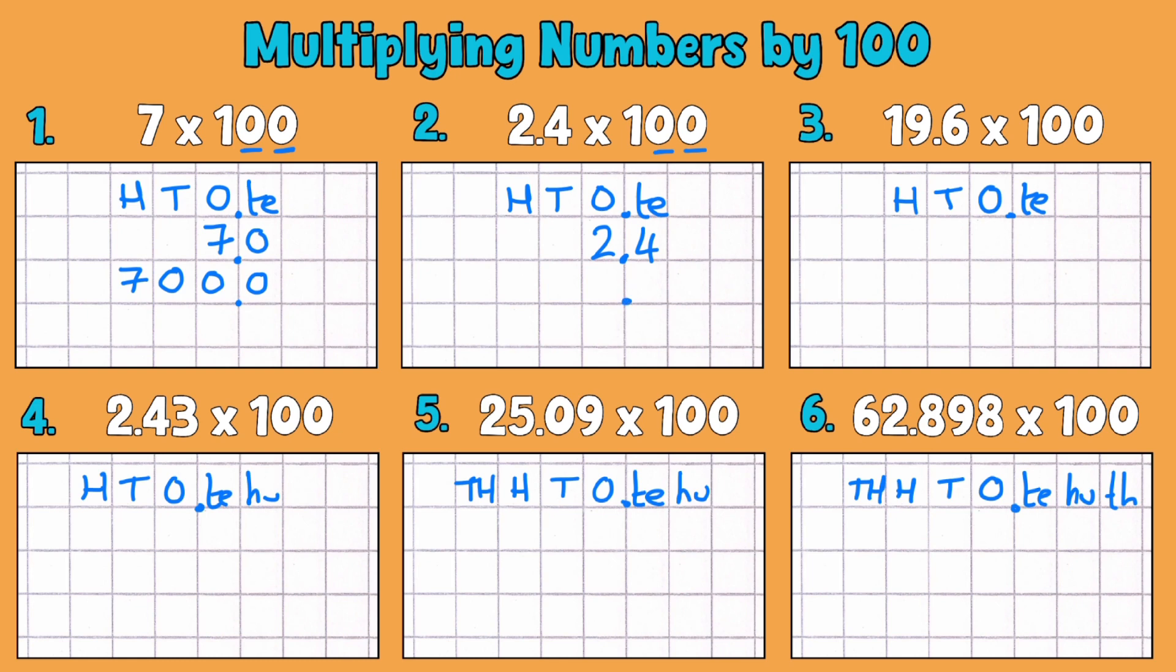So we'll put our decimal place in line that we can use as that anchor point to work around. So 1, 2, so our 2 becomes 200. Our 0.4, 1, 2 becomes 40.